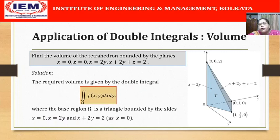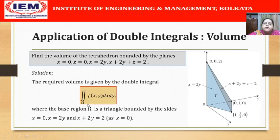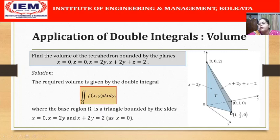So the volume of the tetrahedron may be obtained by evaluating the double integral of f(x,y) dx dy, where we integrate over the base region omega. The base region omega on the xy plane is this triangle with sides: the y-axis (x = 0), x = 2y, and x + 2y = 2.